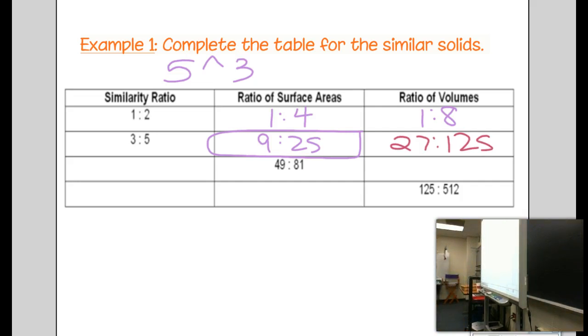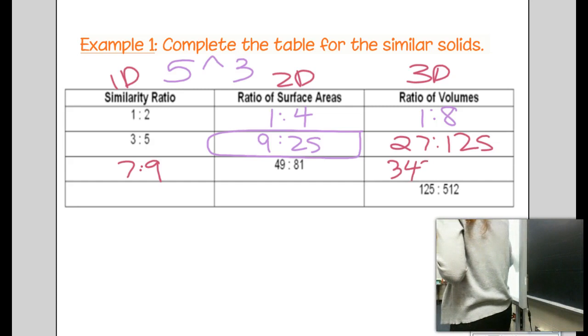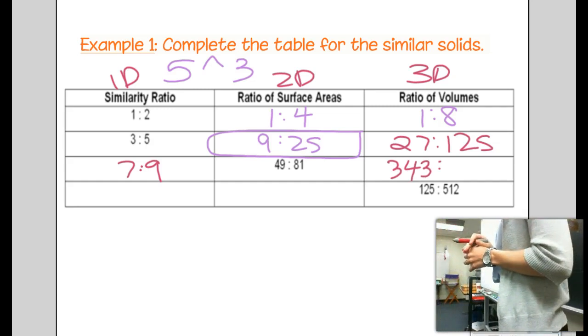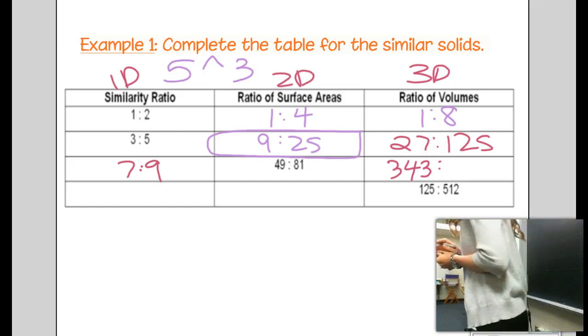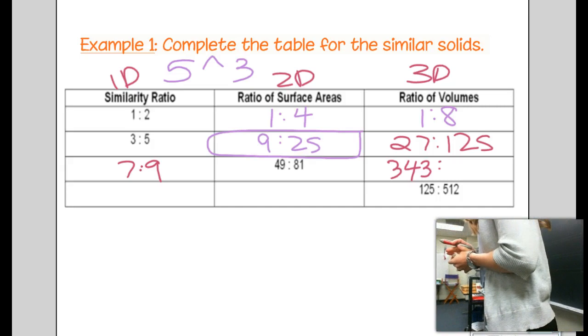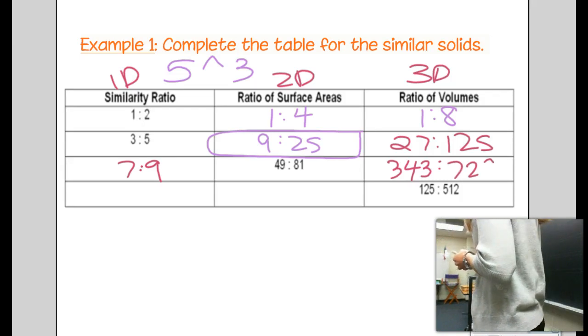The next row, we need to go backwards. So this is the 2D column, right? 1D, 2D, 3D. How do you undo 2D? Square root. Very good. Square root. Megan, what's the square root of 49? 7. Square root of 81? 9. Okay, now we can find the 3D one. Julius, what's 7 cubed? It's going to be a large number. 343. What is 9 cubed? 729.